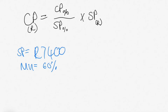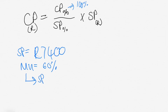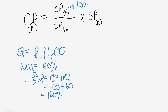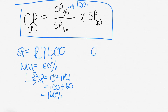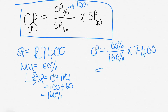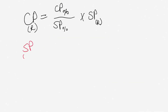We need to work out what the cost price of those goods was. If your markup is 60%, what is your selling price in terms of percent? Remembering that cost price is always 100%, your selling price is going to be your cost price plus your markup — that is 100 plus 60 — giving us 160%. Using the formula, our cost price equals 100% divided by 160%, multiplied by the rand value of our selling price. We get a total cost price of R4,625.